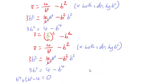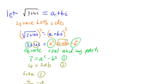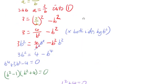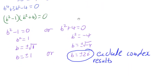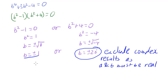We can exclude the complex results because, looking back at our standard form, both a and b have to be real numbers — that's part of the definition of a complex number: a and b must be real. So we exclude the complex results and we're left with b being plus or minus 1.